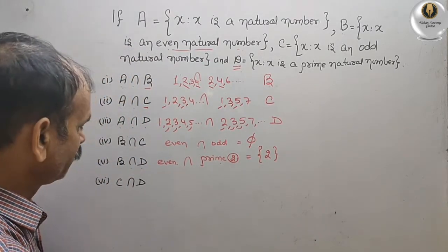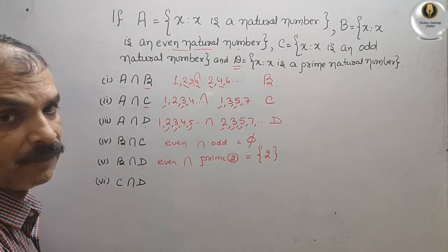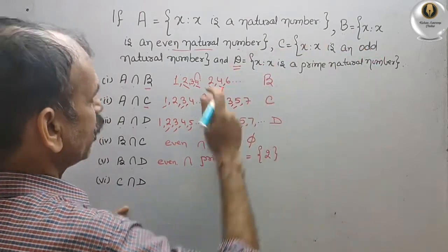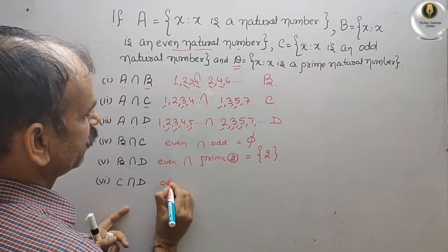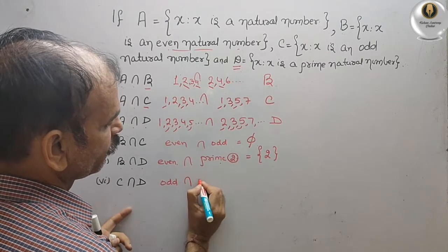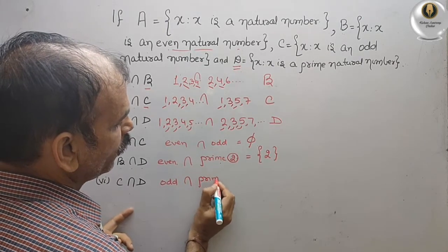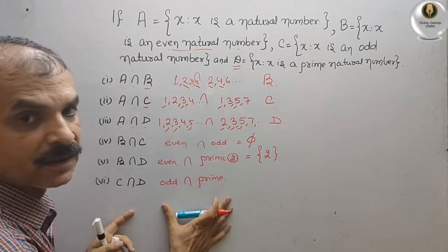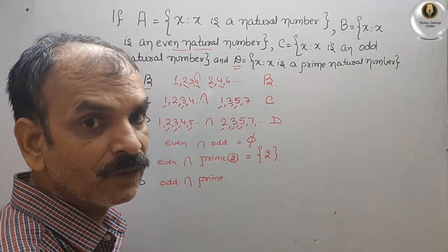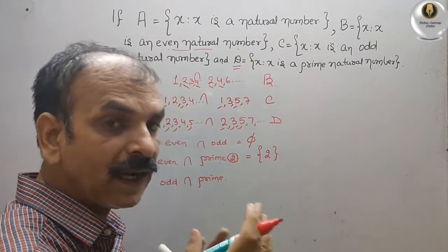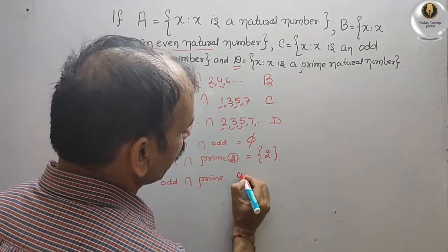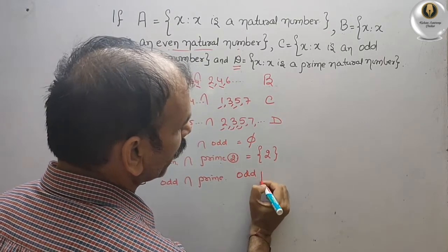Next, C intersect D. C is odd numbers and D is prime numbers. If you intersect them, except 2, every number is common. That means we will write here all odd prime numbers — that is, all prime numbers except 2.